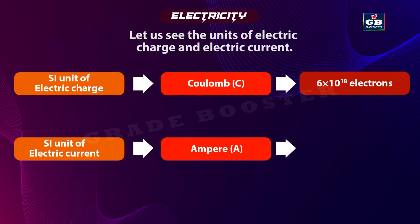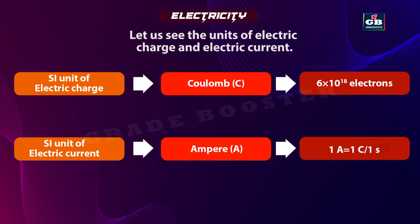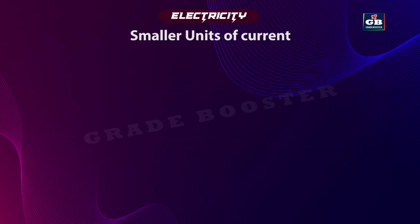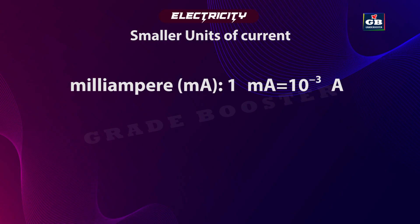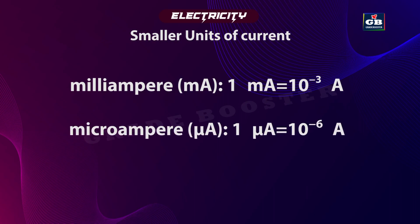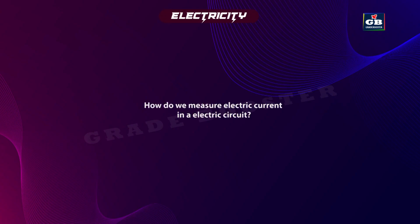One ampere is the flow of 1 coulomb of charge per second: 1A = 1C / 1s. Smaller units of current include the milliampere (mA), where 1 mA = 10^-3 amperes, and the microampere (μA), where 1 μA = 10^-6 amperes.